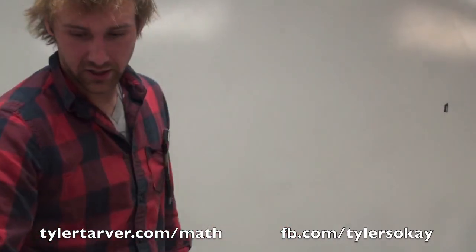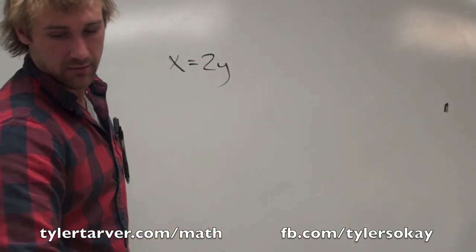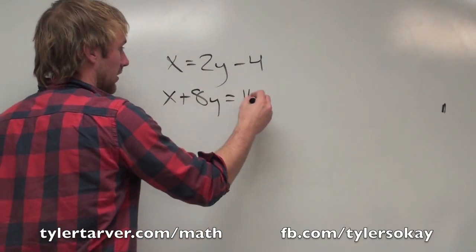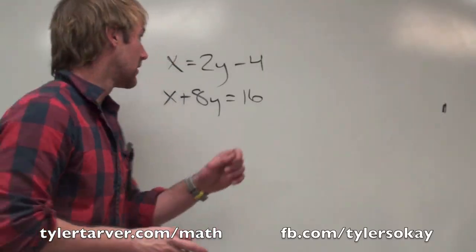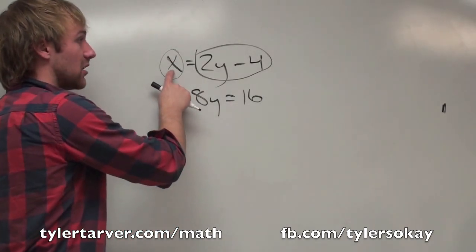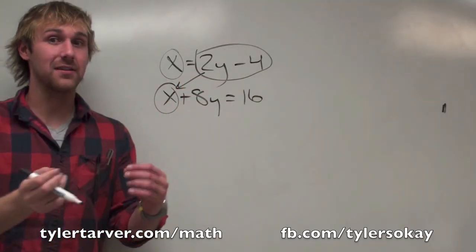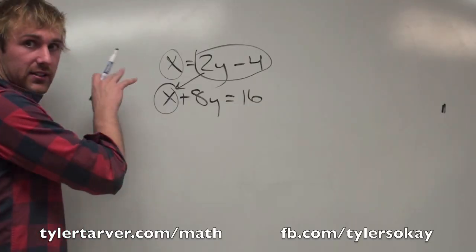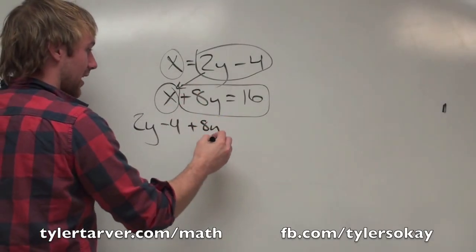Let's do it when it's a little more complicated. Let's say we've got x equals 2y minus 4 and x plus 8y equals 16. Once again, my first step: get any of the x's or y's by themselves. We've already got an x by itself. So what we do is replace that x in the second equation with 2y minus 4, because x has the same value as 2y minus 4. Take out x, put in 2y minus 4, then bring down the rest: plus 8y equals 16.